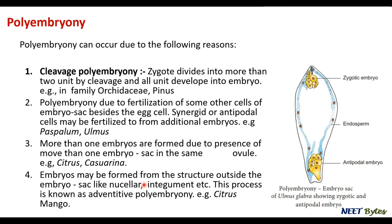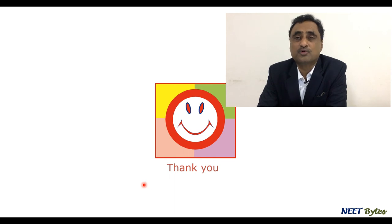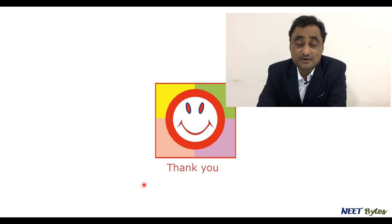Finally, embryos can be formed from structures outside the embryo sac, like the nucellus or integuments — this is called adventive polyembryony, observed in citrus and mango. This covers everything about polyembryony and special modes of reproduction. I hope the concepts of apogamy and apospory are very clear, as they are the core of this topic and questions are often asked in NEET. Don't forget to like and subscribe to this channel. Thank you.